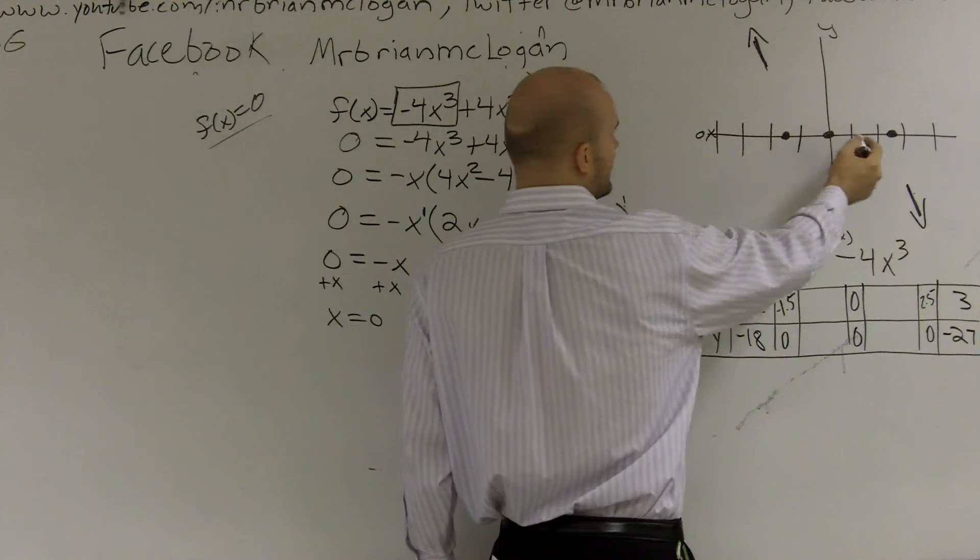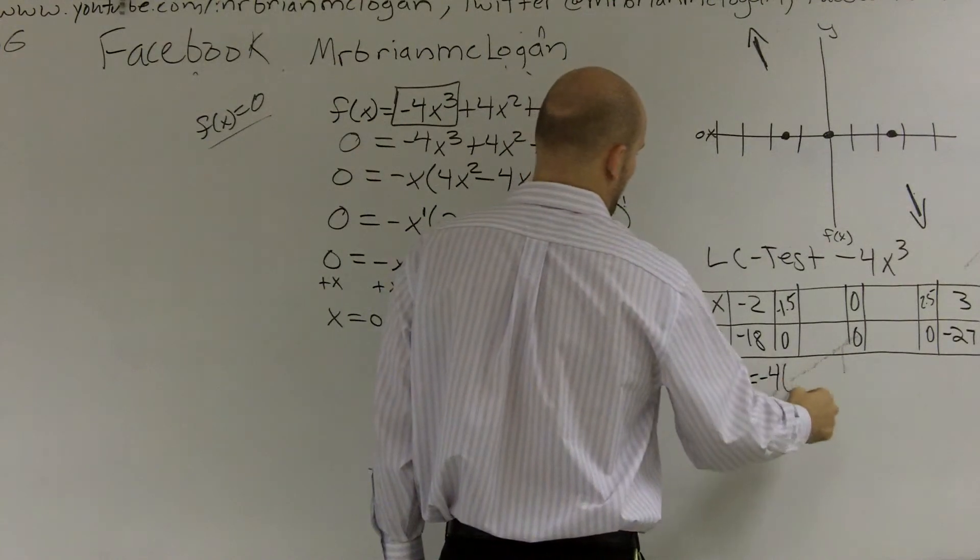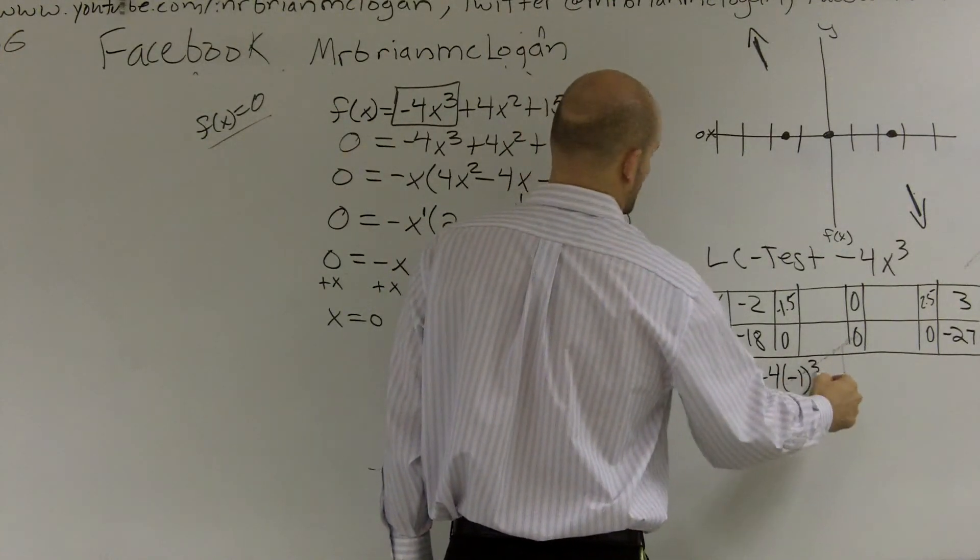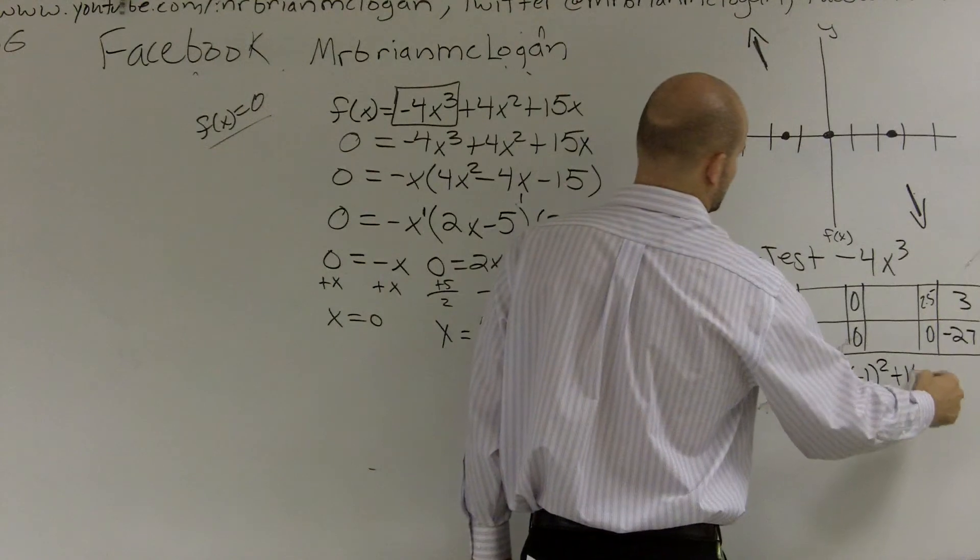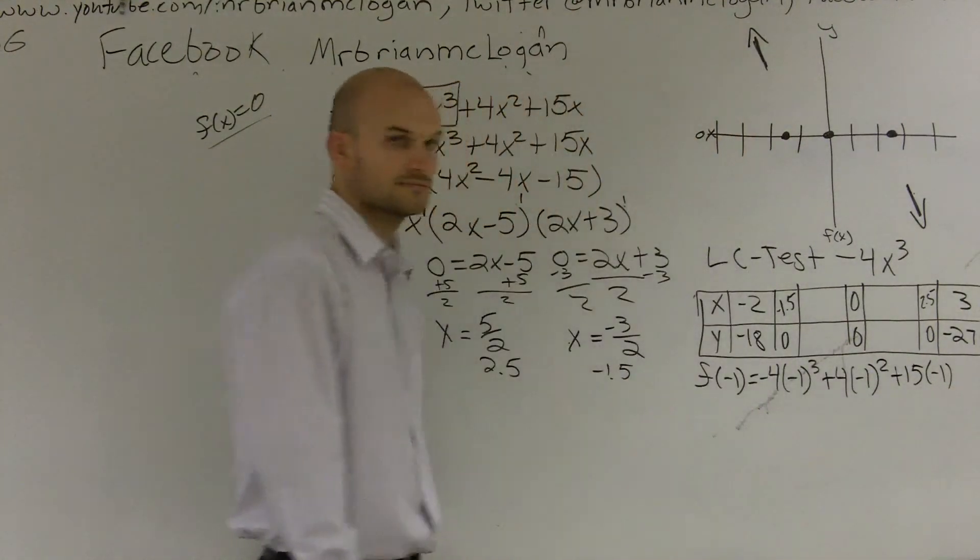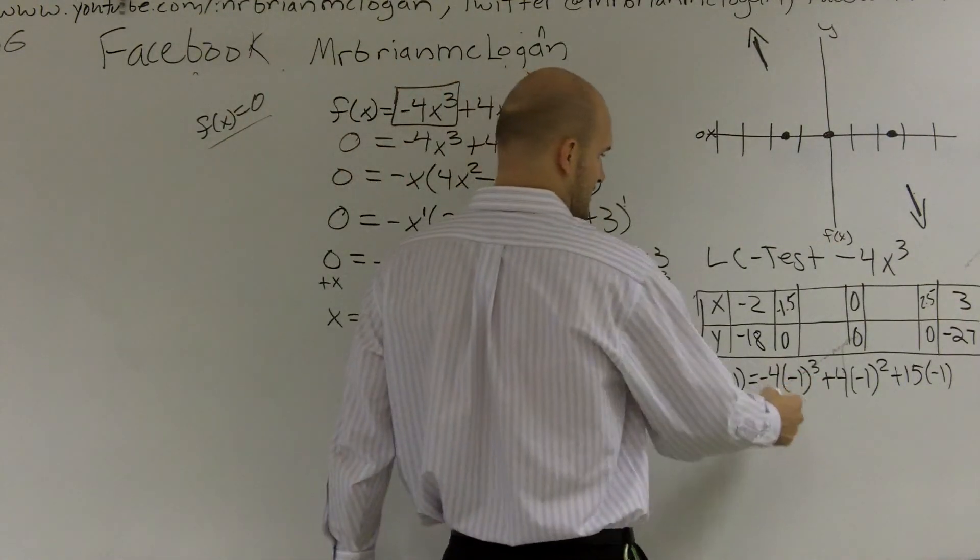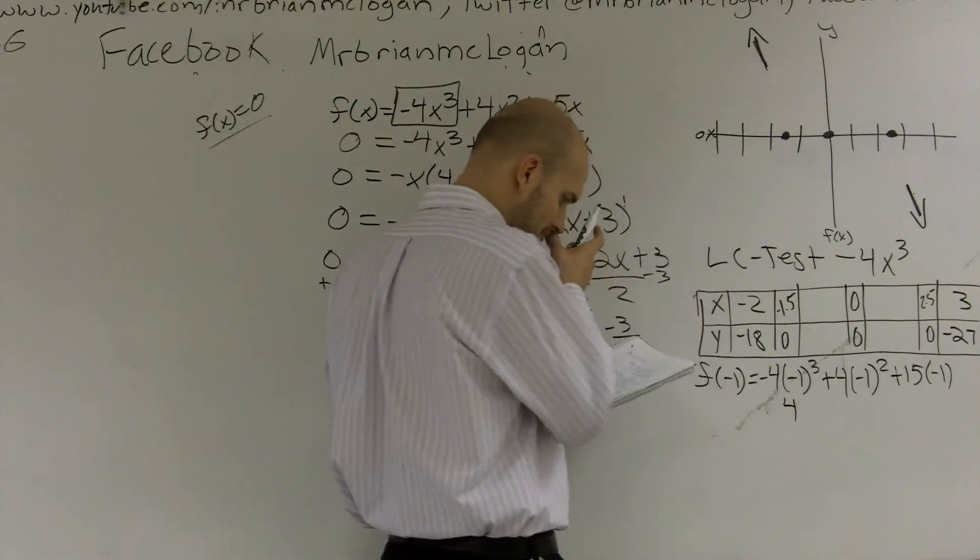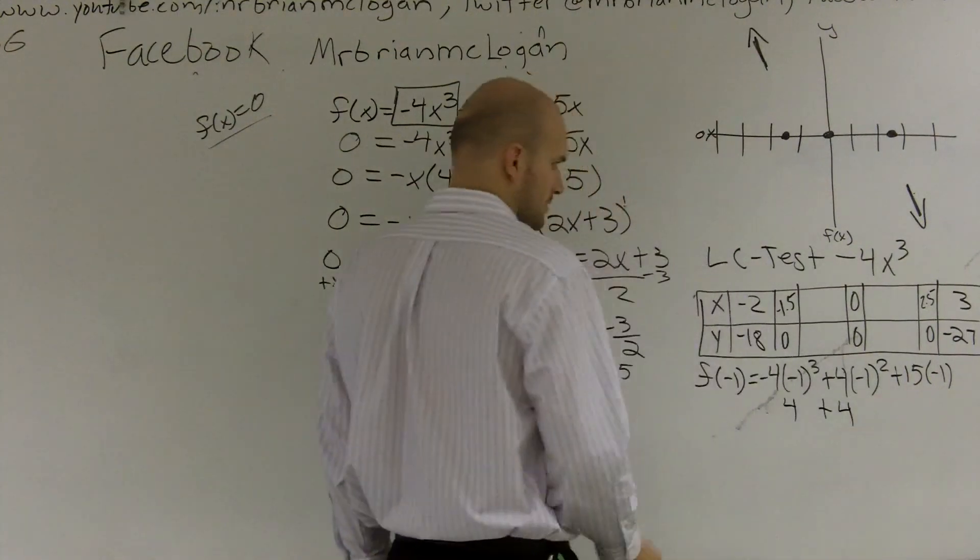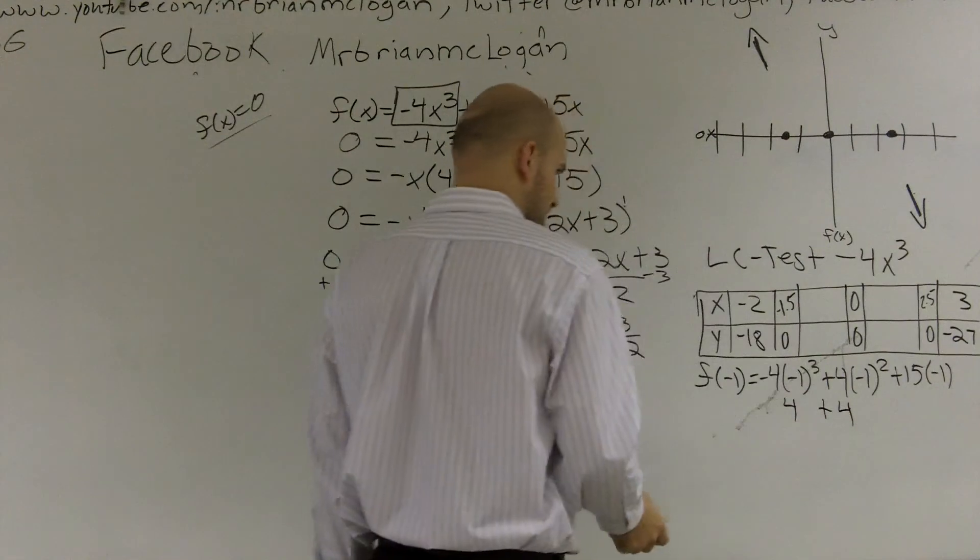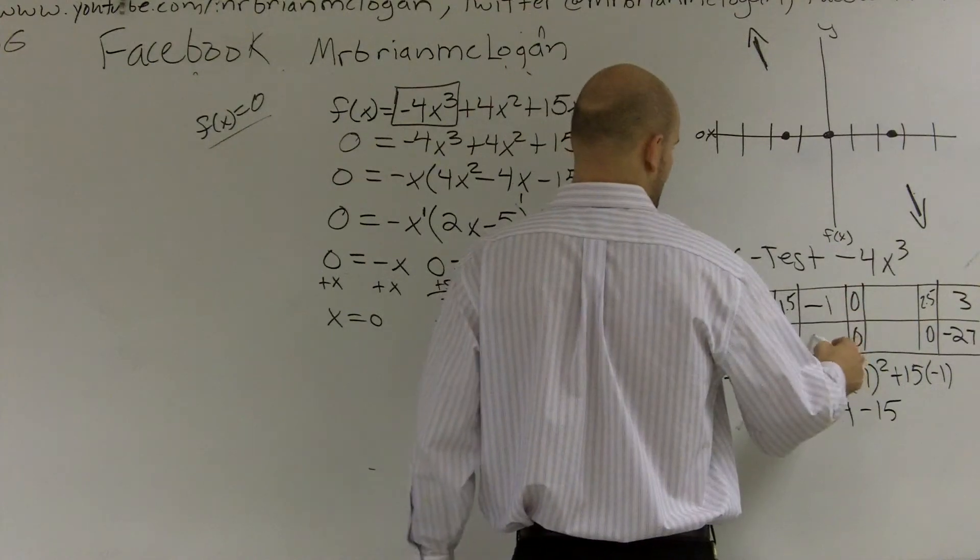Well, it's pretty easy to do negative 1 and 1. So you do f of negative 1, which equals negative 4 times negative 1 cubed plus 4 times negative 1 squared plus 15 times negative 1. And when you do the math, you get negative 1 cubed is a negative 1 times 4 is going to be a positive 4. And plus negative 1 squared is a positive 1 plus 4 is 4. And plus negative 15. And therefore, you get a negative 7. So negative 1 equals a negative 7.